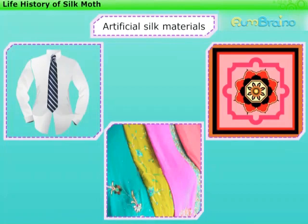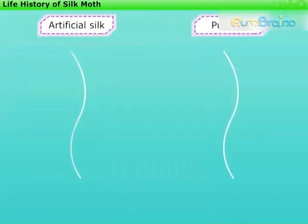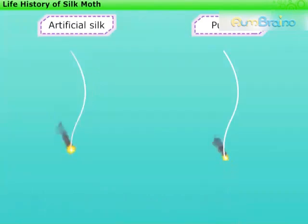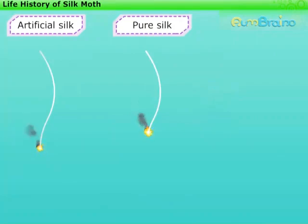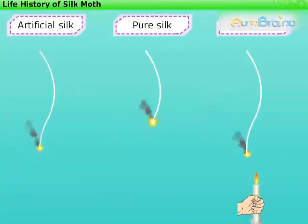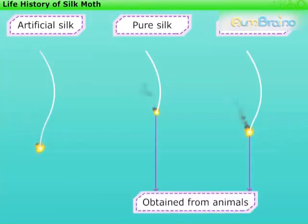Now let us perform a small activity to find the difference between pure and artificial silk. Take an artificial and a pure silk thread. Individually burn these threads carefully. You will notice that while burning, there is a difference in the smell of both these threads. Similarly, when you burn a woolen fiber, you will find that it smells like the pure silk thread. This is because both these fibers are obtained from animals.